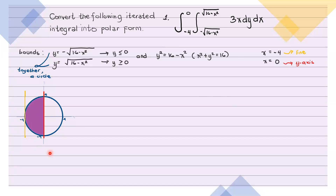Next, we convert. So itong x squared plus y squared equals 16 — dahil siya ay circle centered at the origin, ang kanyang polar equation ay r equals the radius. So we have r equals 4. Take note na dito, nadadamay yung origin — yung center ng circle natin sa ating region of integration. So ang r natin ay magsisimula ulit sa 0. So we have r equals 0 to r equals 4.